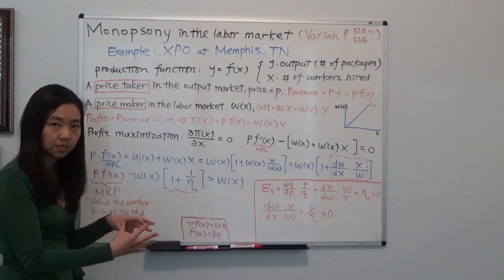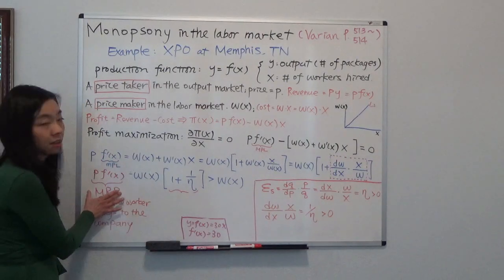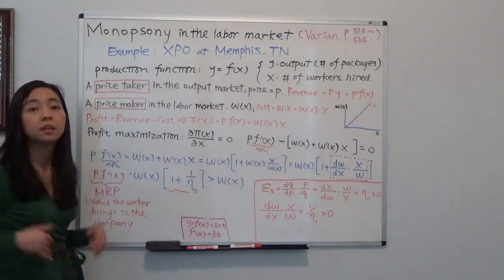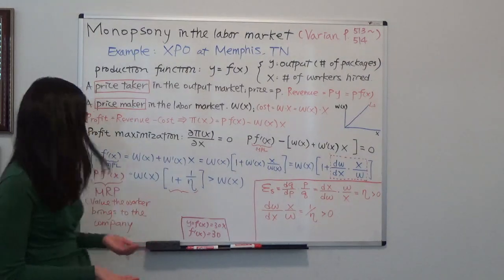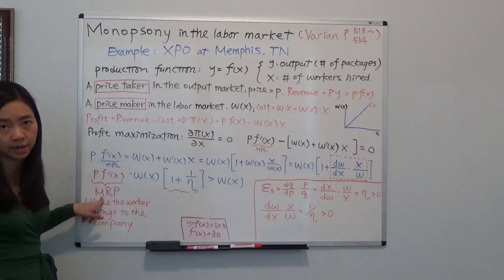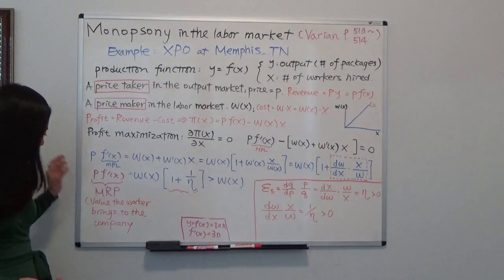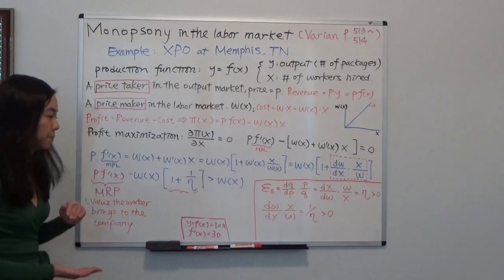will be 30 packages times $1. That will be $30. So that will be the value the worker provides to a company. We also call this the MRP, marginal revenue product. So that's the value this worker provides to a company.